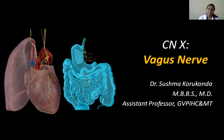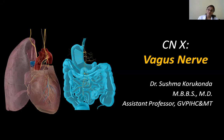Today the class is about the 10th cranial nerve, which is the vagus nerve. Yesterday I talked about the glossopharyngeal, and like that, the vagus is also a mixed nerve. It has a very long course and extensive distribution. The name vagus comes from a Latin word meaning wandering, and it traverses throughout the thorax and abdomen, so it is called the wandering nerve.